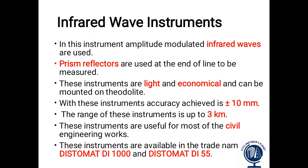Infrared wave instruments make use of infrared waves. To measure the distance of a line, a prism reflector is placed at the end of the line. These instruments are light, economical, and can be mounted on a theodolite. The accuracy achieved is plus or minus 10 mm and the range is up to 3 km.